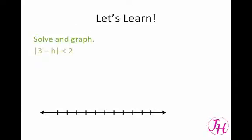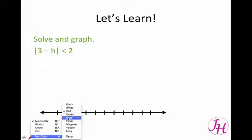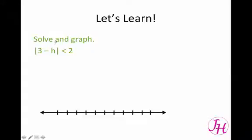We're going to solve and graph the absolute value of 3 minus h is less than 2. So the absolute value means the distance away from 0. The distance away from 0 that this expression is, is less than 2 units.